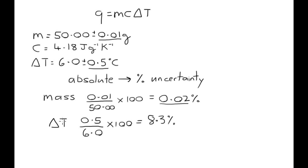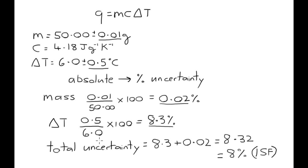For the change in temperature delta T we have the absolute uncertainty which is 0.5 divided by the temperature which is 6.0 times 100 to give you 8.3%. So for the total uncertainty what we do is this.